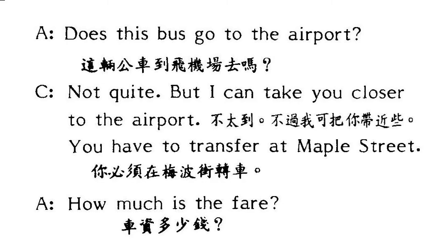这个 bus 一定是 315 号 bus。他说：Not quite，并不十分的。他在解释：But I can take you closer to the airport. Closer，close 是靠近，加 er 就是更靠近一点。我能够带着你更靠近飞机场，差不多快到飞机场。不过你还要转车，You have to transfer at Maple Street.